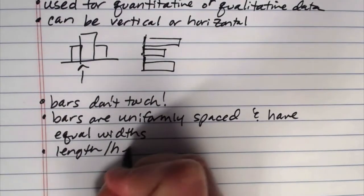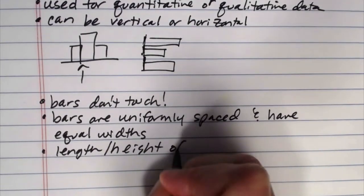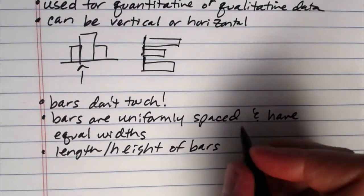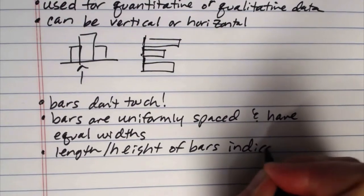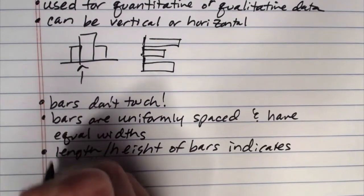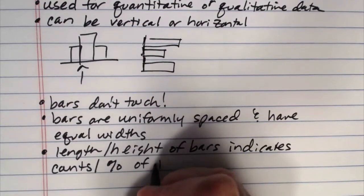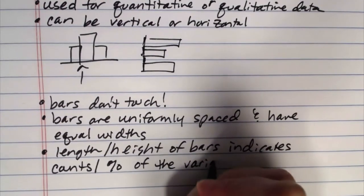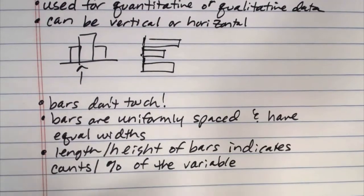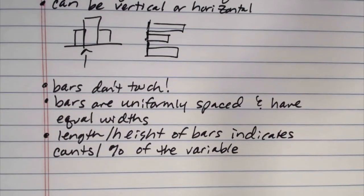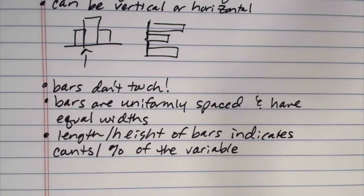The length or height of the bars indicates counts or percentages of the variable. So it can measure frequency or it can measure percentage just like a histogram. But histograms can only be used for quantitative data. And bar graphs can also be used for qualitative data.